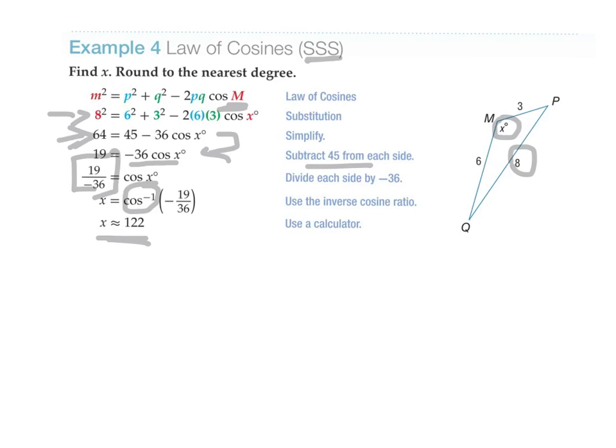Is that a reasonable answer? Well, let's have a look. You know that 122 is greater than 90, so it must be the greatest angle. And if you look at the triangle 3, 6, 8, it's directly opposite, so the biggest angle must be across from the biggest side. So is it reasonable? Yes. Is it the correct answer? Well, only time will tell, but at least it's a reasonable answer.